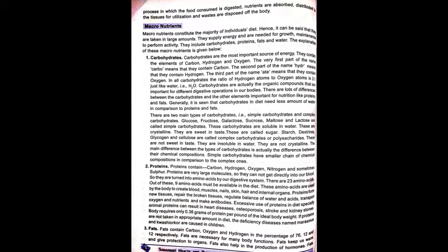Glucose, fructose, galactose, sucrose, maltose, and lactose are called simple carbohydrates. These are soluble in water, crystalline, and sweet in taste — they are called sugars. Starches, dextrins, glycogen, and cellulose are called complex carbohydrates or polysaccharides. These are not sweet in taste, are insoluble in water, and not crystalline. The main difference between the types is their chemical composition — simple carbohydrates have a smaller chain of chemical composition compared to complex ones.